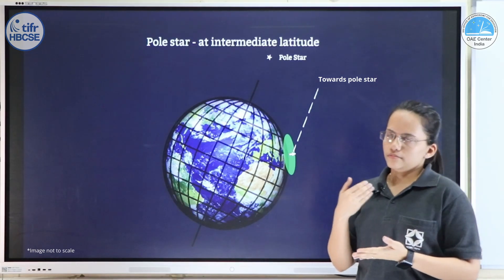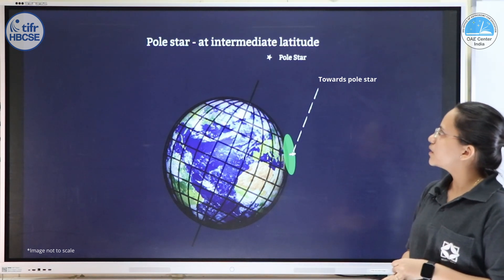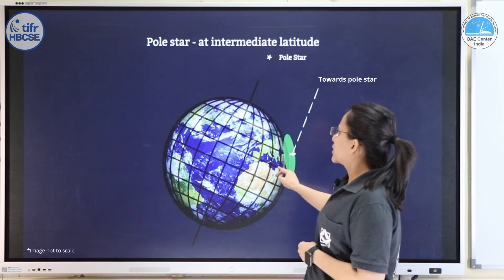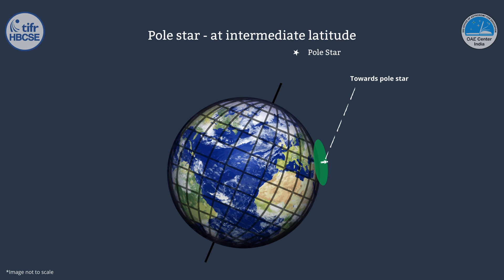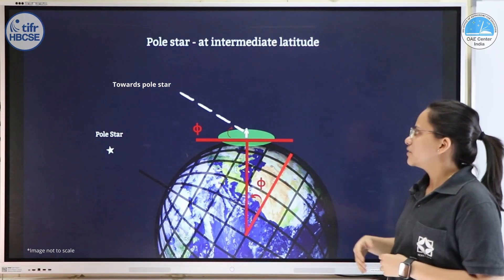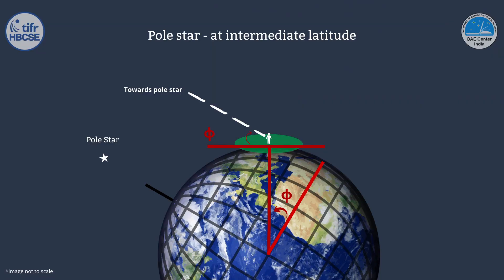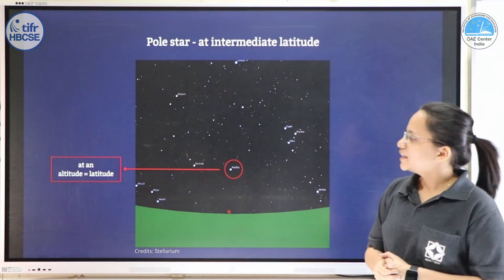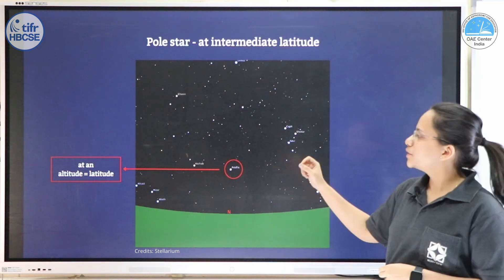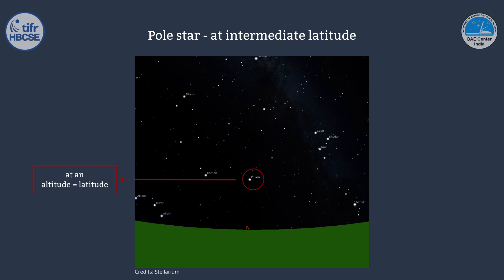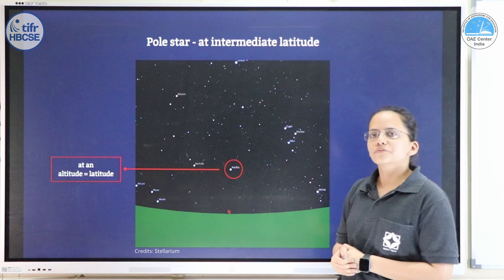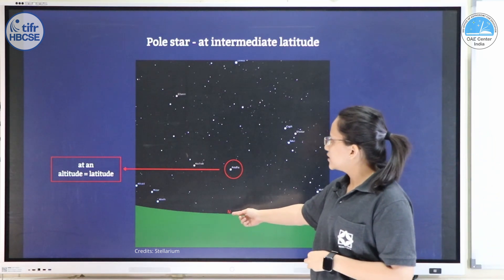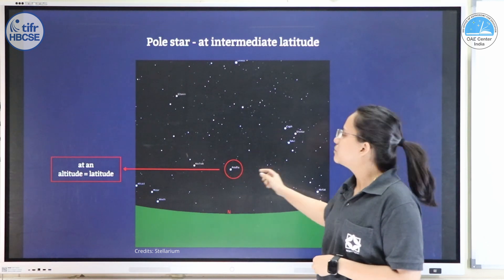We have seen where the pole star appears at the pole and at the equator. What about intermediate locations? For all latitudes between 0 and 90 degrees, the altitude of the pole star in the sky depends on the latitude from where you are observing. If the observer is at latitude 5 degrees, the pole star will be at an altitude of 5 degrees. This leads to an important result: the altitude of the pole star equals the latitude of the place. For example, Mumbai, India is at about 19 degrees north latitude, so the pole star is at 19 degrees altitude there.